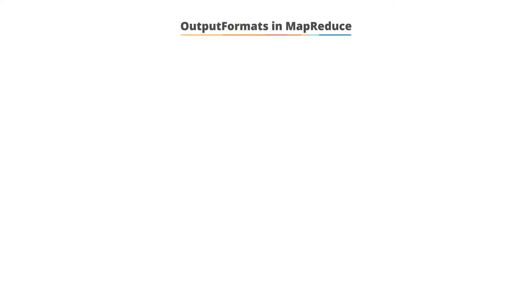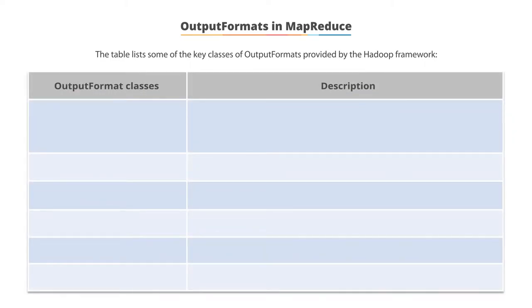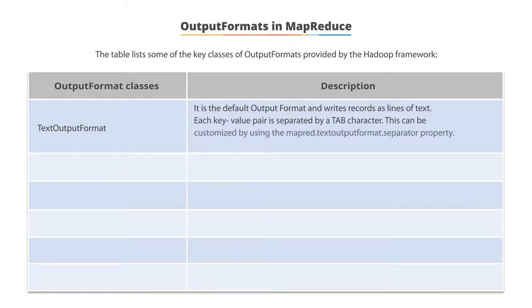Output formats in MapReduce. Now that you've completed the input formats in MapReduce, let's look into the classes for the MapReduce output format. The first class is default output format, which is text output format. It writes records as lines of text. Each key value pair is separated by a tab character.